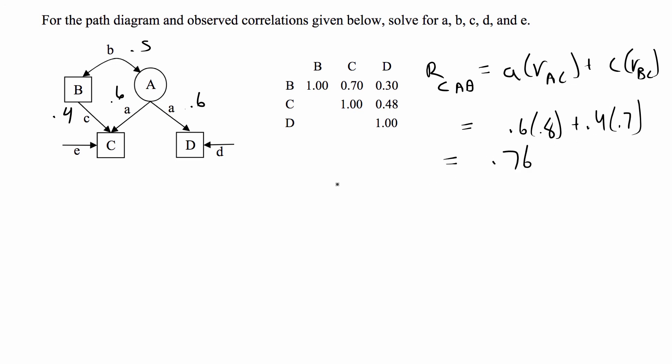So this is equal to 0.6 times 0.8 plus 0.4 times 0.7, which is equal to 0.76. So E is equal to the square root of E squared, which is equal to 1 minus 0.76, which is equal to 0.49.